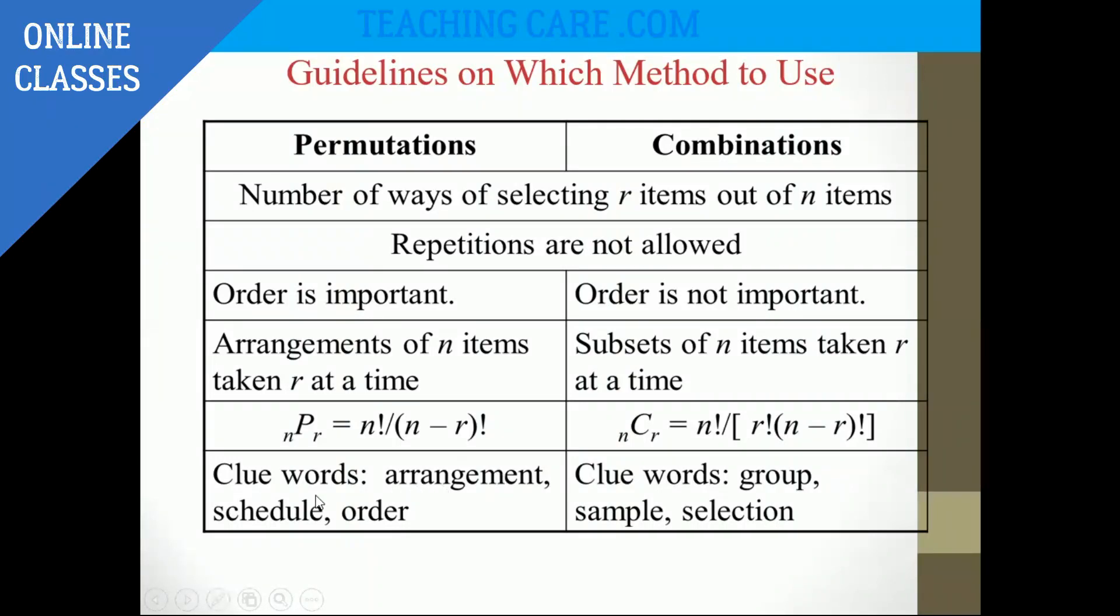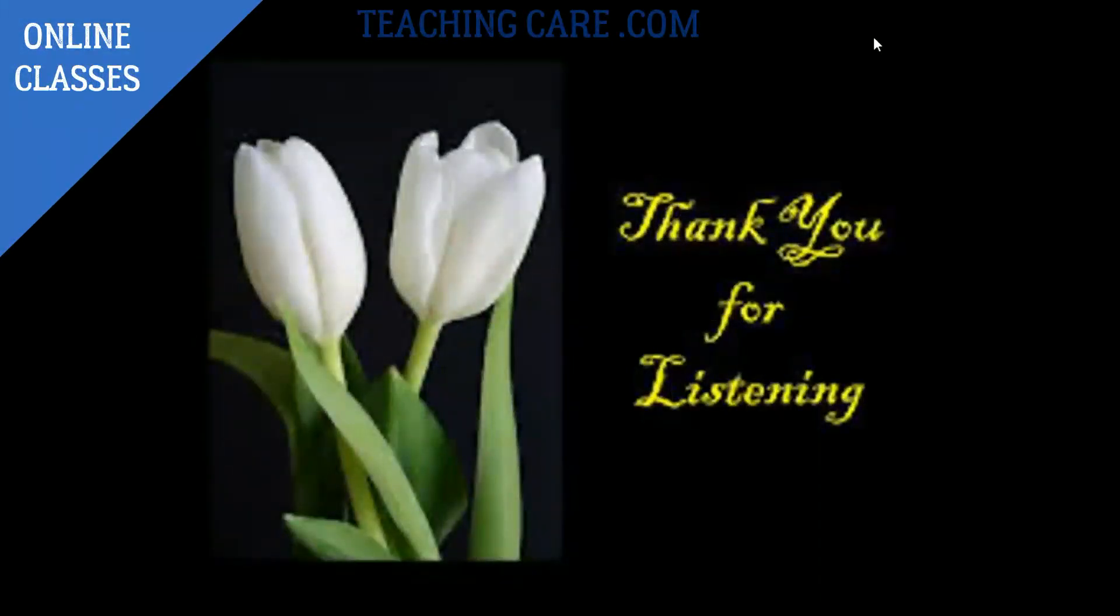Now, along with this arrangement, schedule, and order, you can also have, it's like, you can have it for race, any competitions, they are talking about prizes. Those come under permutation. Whereas, for combination, along with this group, sample and selection, you can have the members of a colony, like selections, or something like that. Or even the items you are selecting from a shop. And the balls you are selecting, all those things. That comes under combination. This is regarding your explanation.